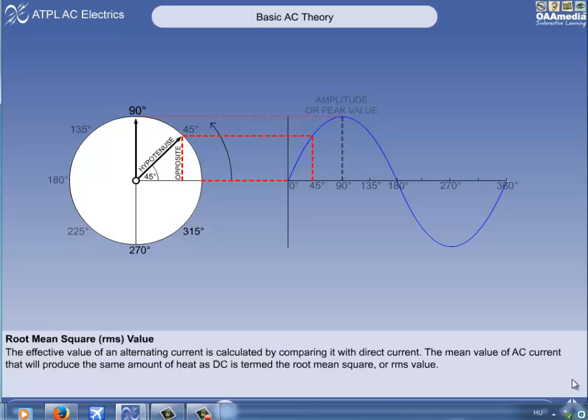As the values follow a sine curve, then the value at 45 degrees can be calculated using the formula sine equals opposite divided by hypotenuse.